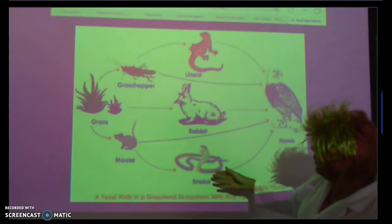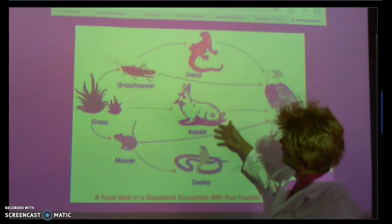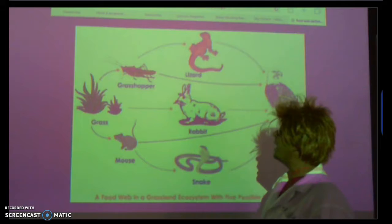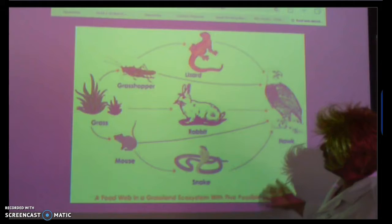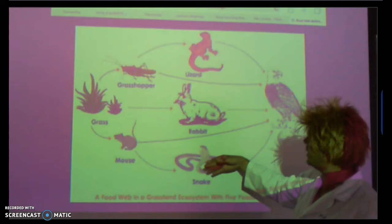Then we have our next level with the lizard and snake at about the same level. The lizard will eat the grasshopper, the snake will eat the mouse—a snake probably wouldn't go after a rabbit but could. Then we've got our apex predator that ties it all together, the hawk. A hawk will go after all three of these: the snake, the rabbit, and the lizard.